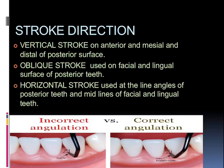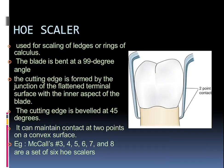Talking about stroke directions: the vertical stroke is on the anterior and the mesial and distal of the posterior surface; the oblique stroke is used for facial and lingual surfaces of posterior teeth; and the horizontal stroke is used at the line angles of the posterior teeth and midlines of the facial and lingual surfaces.